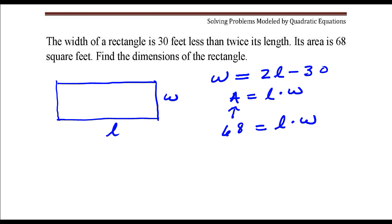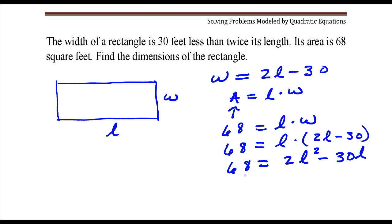So the way I'm going to solve this is I'm going to first replace this w with 2l minus 30. 68 is length times 2 times length minus 30. I'm going to simplify this a little bit. I'm going to distribute l to each of these terms in this binomial. It would be 2l squared minus 30l. I'm going to subtract 68 from both sides.